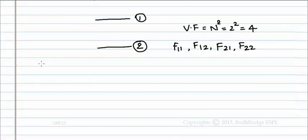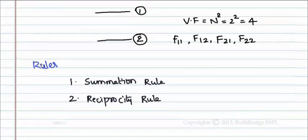Now let us see some rules in finding view factors. The different rules are: 1, summation rule, and 2, reciprocity rule. Now take the above example.